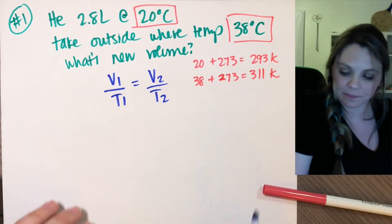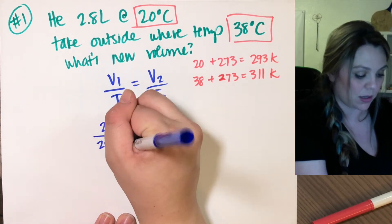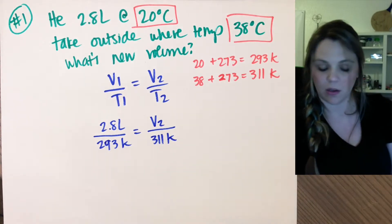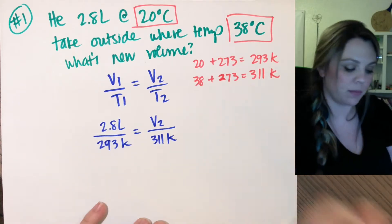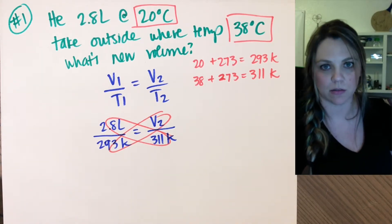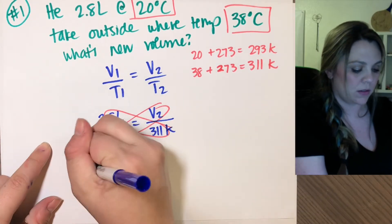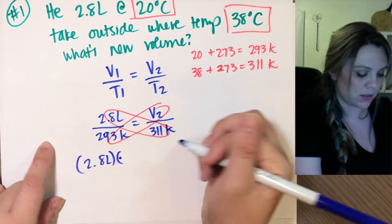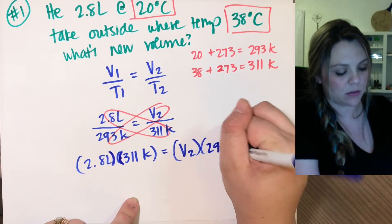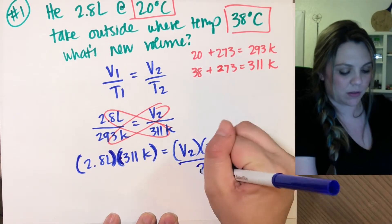Volume one - I just plug in now. Volume one is 2.8 liters divided by my initial temp of 293 kelvin equals I don't know what my volume two is, that's my unknown, divided by 311 kelvin. You can solve this any which way you like. If you have two fractions set up you can do the butterfly method, whatever, I don't care how you solve it. Whatever way solving this makes sense to you is good for me. If you did it this way, you'd get 2.8 liters multiplied by 311 kelvin which would equal V2 times 293 kelvin.